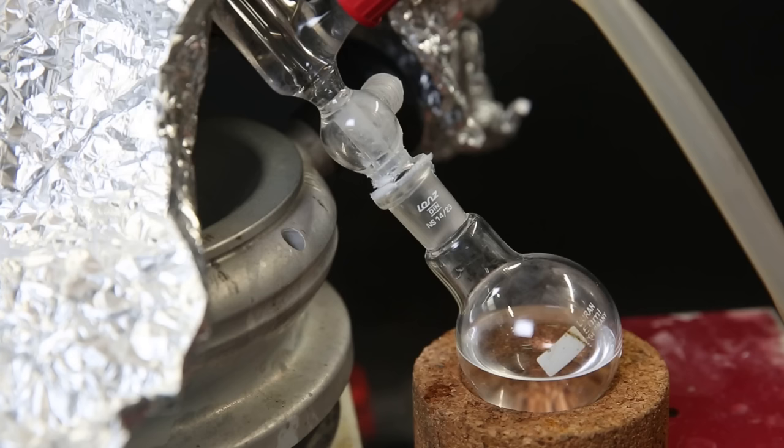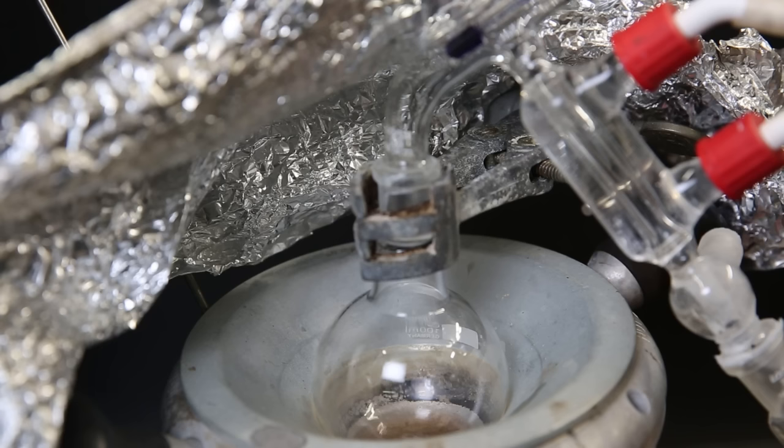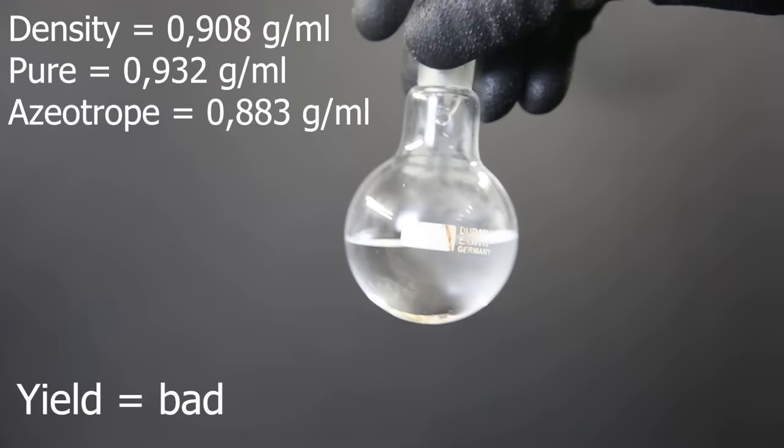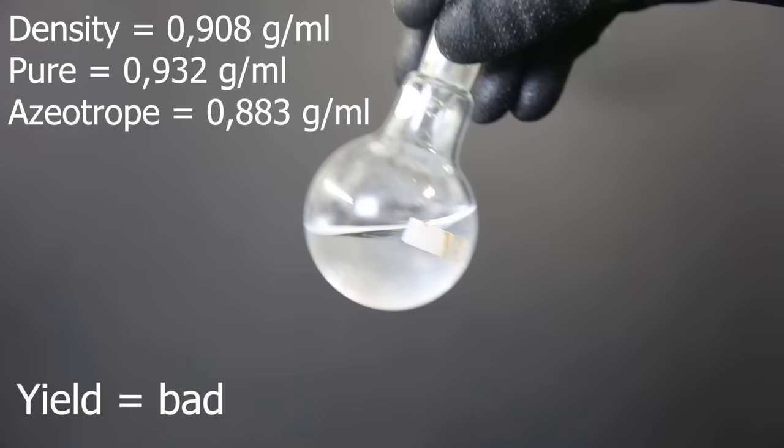To get the pure trimethylborate, it would probably be best to set up a new receiving flask when it reached 69C. But when it reached that temperature, only very little came over. And I wasn't really interested in only having a few milliliters left, after I lost almost all of it. What would be more interesting is a method that can take out all of the methanol right away, instead of having a bunch of azeotrope left over, or having to re-treat it constantly. So what was collected in the flask had a density of 0.908 grams per milliliter, which is more than the azeotrope, but less than the pure trimethylborate.